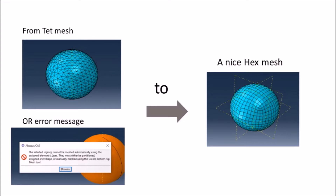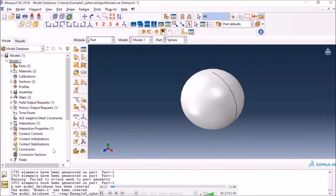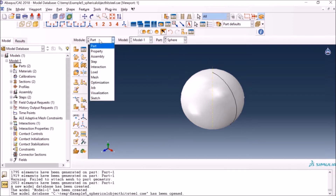Hi everyone, in this short video I will try to answer one of the questions I received: how to mesh a part with hex mesh if Abaqus CAE is not allowing you — it can only either allow you to mesh with tet, or it gives you this kind of error message as shown on the screen. So this is what we're going to do today. Let's start with a sphere and I will try to mesh it.